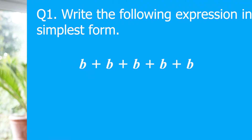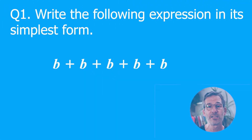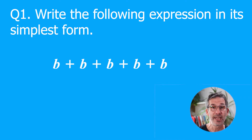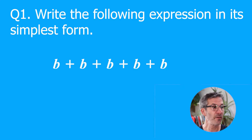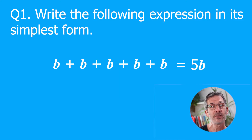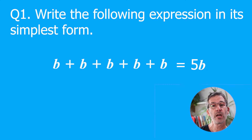Write the following expression in its simplest form: B + B + B + B + B. In this question we've got one lot of B and we're adding another and another — there are five of them in total. When we have five lots of something we just say five of that thing: five cats, five people, five pens. So here we do the same — we just say 5B. That's our way in algebra of saying five lots of B, or five times B.